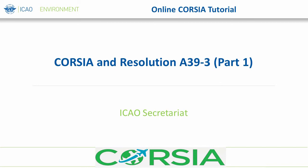Hello, and welcome to the second presentation of the Online CORSIA Tutorial. This is Part 1 on the Explanation of CORSIA in Resolution A39-3. Throughout this and the other Online CORSIA Tutorial presentations, references to specific paragraphs in Assembly Resolution A39-3 will be given. It is recommended to have a copy of the resolution available during these tutorial sessions. The document can be found on the ICAO Environmental Site's 39th Assembly link at www.icao.int. This tutorial will go through the key aspects of Assembly Resolution A39-3, which sets the overarching design features of CORSIA.